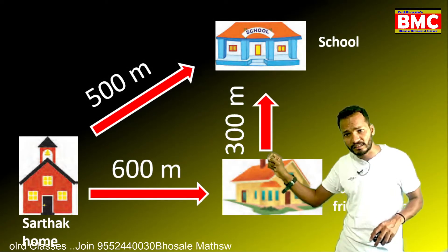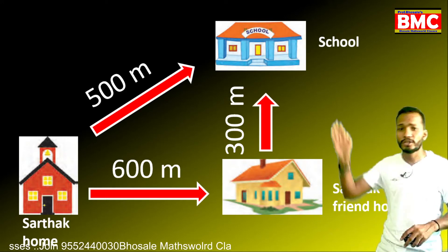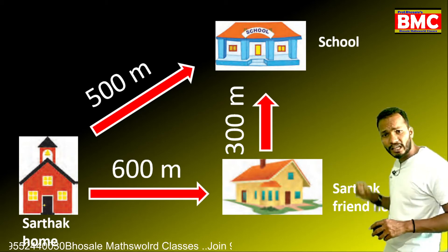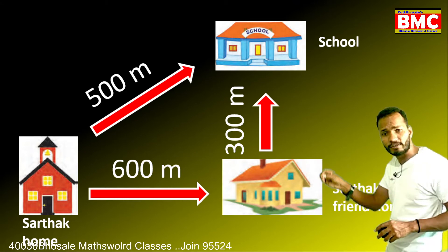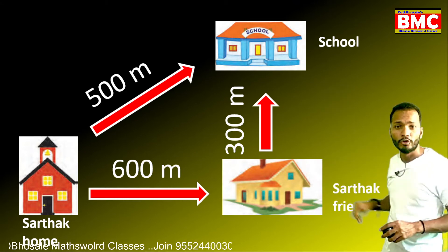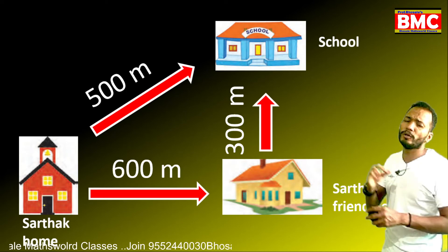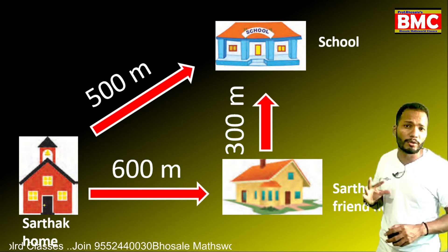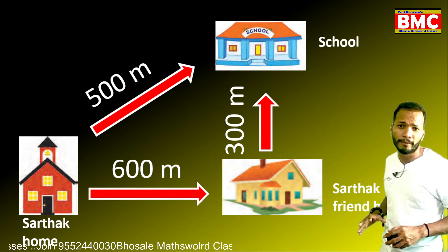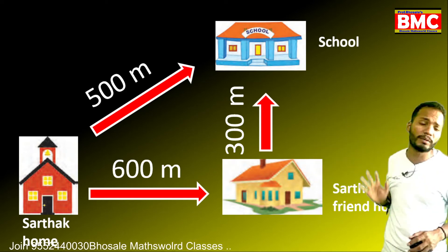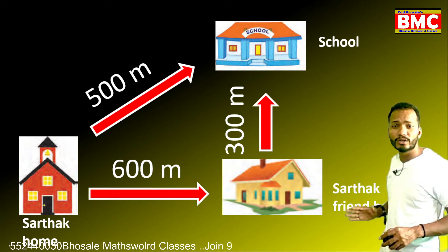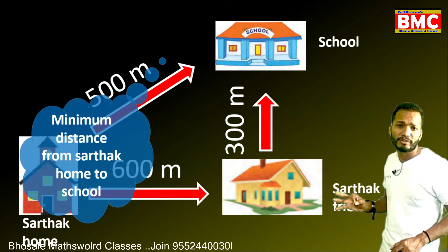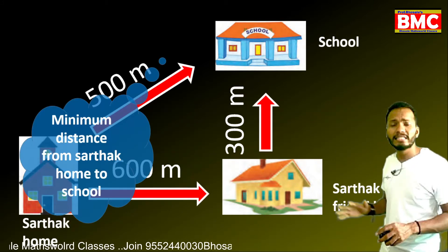For the same example: Sartak's home is here, his friend's home is here, and the school is here. Now, the direct path from Sartak's home to school — even though the actual path he took was longer — the minimum distance from Sartak's home to the school is 500 meters.